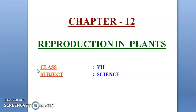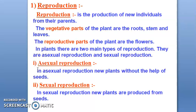Hello everyone, good morning students. Today we are here to discuss a new chapter named reproduction in plants. In this chapter we will discuss how a new plant is reproduced from an old plant. Reproduction is the production of new individuals from their parents — you can generate a new entity, that is known as reproduction.